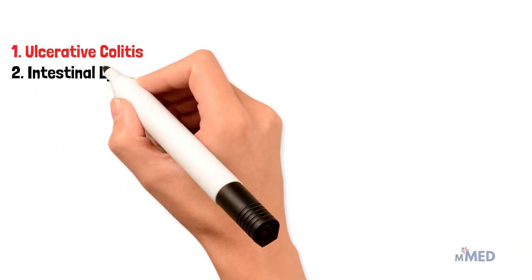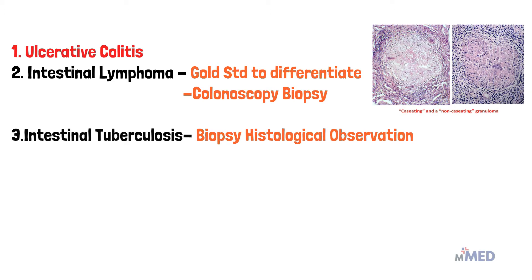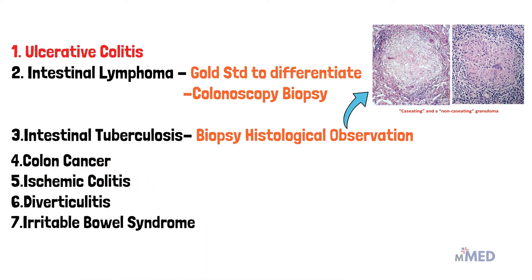The number one differential diagnosis for Crohn's disease is ulcerative colitis, which is very similar. Intestinal lymphoma is another differential, and the gold standard to differentiate it from Crohn's disease is a colonoscopy biopsy. Intestinal tuberculosis is another important differential — on biopsy we can observe caseating granulomas in intestinal tuberculosis versus non-caseating granulomas in Crohn's disease. Other differentials include colon cancer, ischemic colitis, diverticulitis, and irritable bowel syndrome.